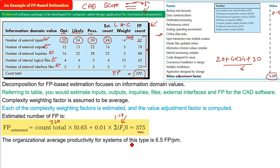Now the organizational average productivity for system of this type, in different organization, the average value is 6.5 function point per person month. This we have got historically or from other organization, from other studies you can say.